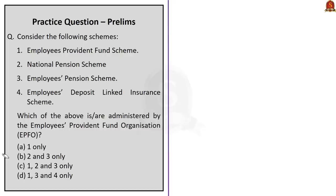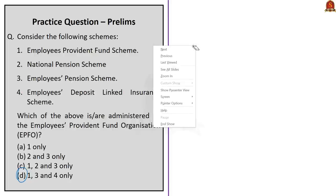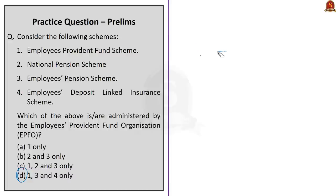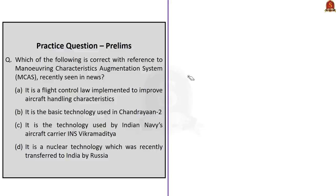The next question: The Sunna Vaddi Panta Runalu scheme or zero interest crop loan scheme recently seen in the news is introduced by which state? The correct answer is option A — Andhra Pradesh. Next question: Which of the following schemes — Employees Provident Fund Scheme, National Pension Scheme, Employees Pension Scheme, and Employees Deposit Linked Insurance Scheme — are administered by EPFO? The correct answer is option D: one, three, and four only. Note that the National Pension Scheme was launched in 2004 and is regulated by the Pension Fund Regulatory and Development Authority under the Ministry of Finance, not EPFO.